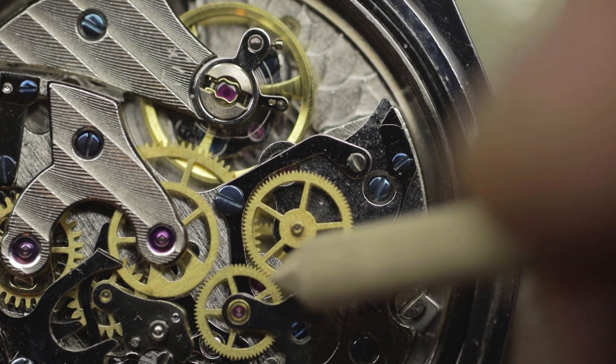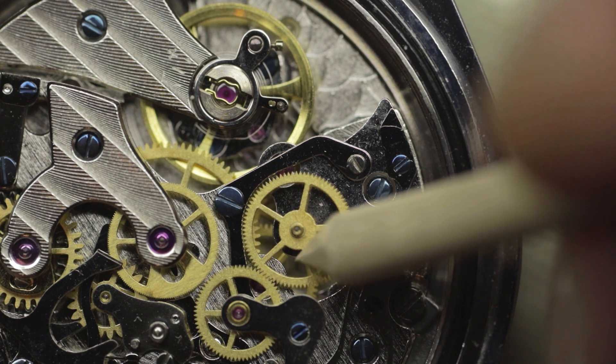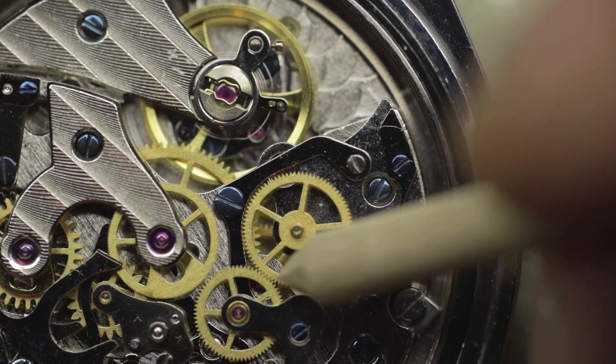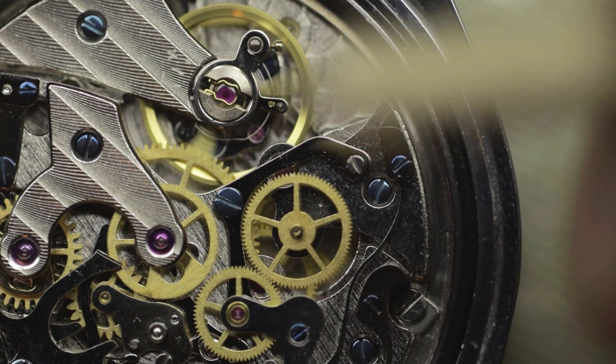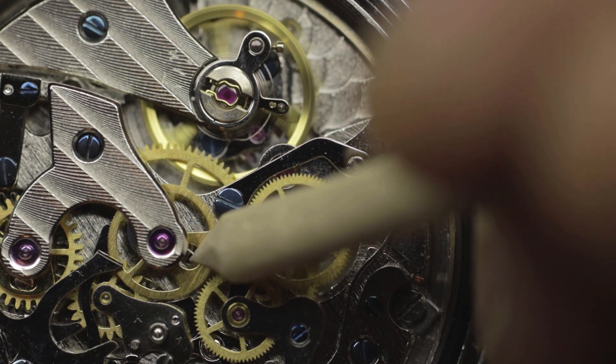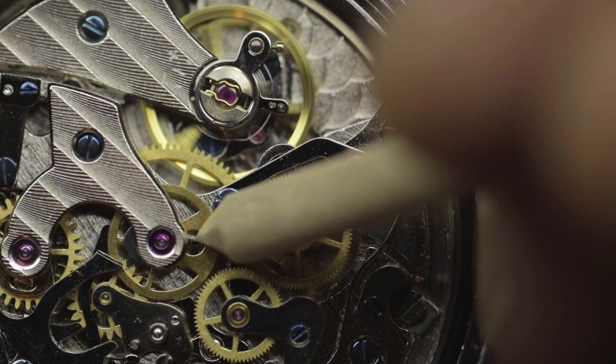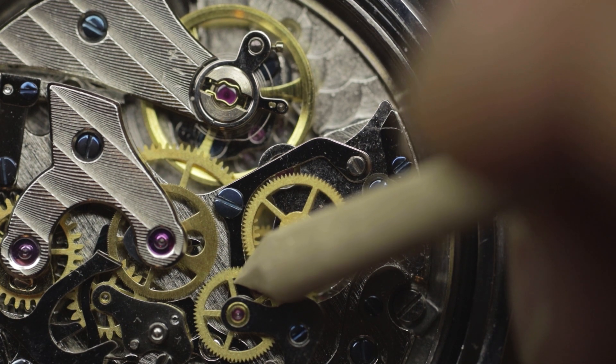The usual cause of that is bad meshing between the fourth wheel driving wheel on the extended pivot and the meshing clutch wheel here, or the meshing clutch wheel and the chronograph runner. The chronograph runner has very small fine teeth whereas the rest of them have quite coarse teeth in comparison.